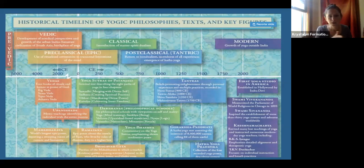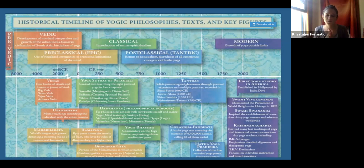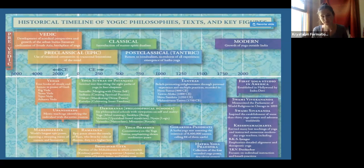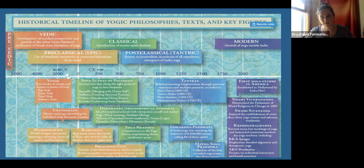Then we have Patanjali's Yoga Sutras, coming around 200 CE — a culmination of all previous works of yoga, organized into a system. This gives us our eight limbs, Ashtanga Yoga — not the Ashtanga Yoga of modern times, but Ashtanga as in eight limbs. The Padas describe: the aim of yoga, the practice of yoga, the resulting powers of yoga, and ultimate liberation. This is known as Raja Yoga, the kingly path or the path of meditation.